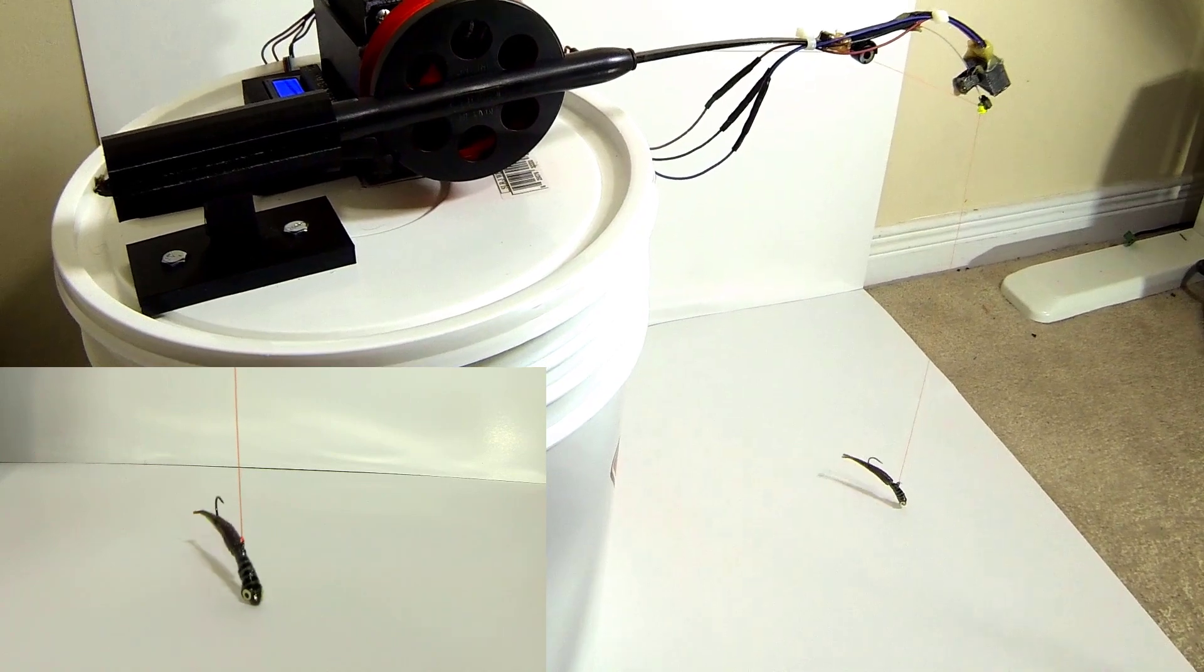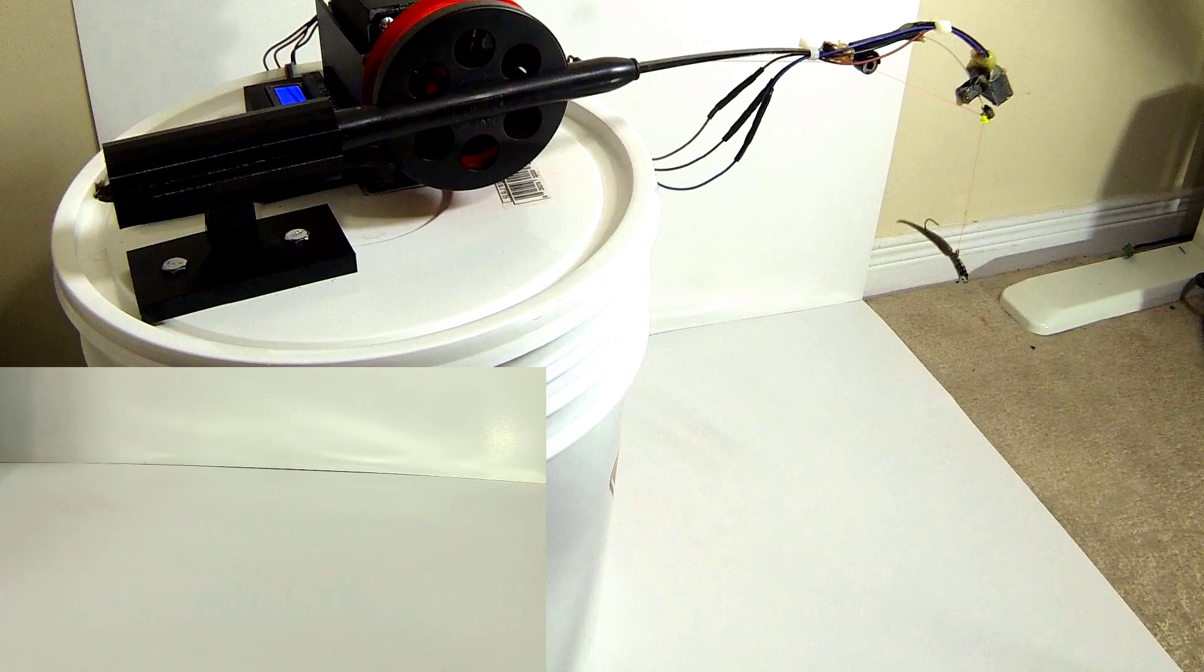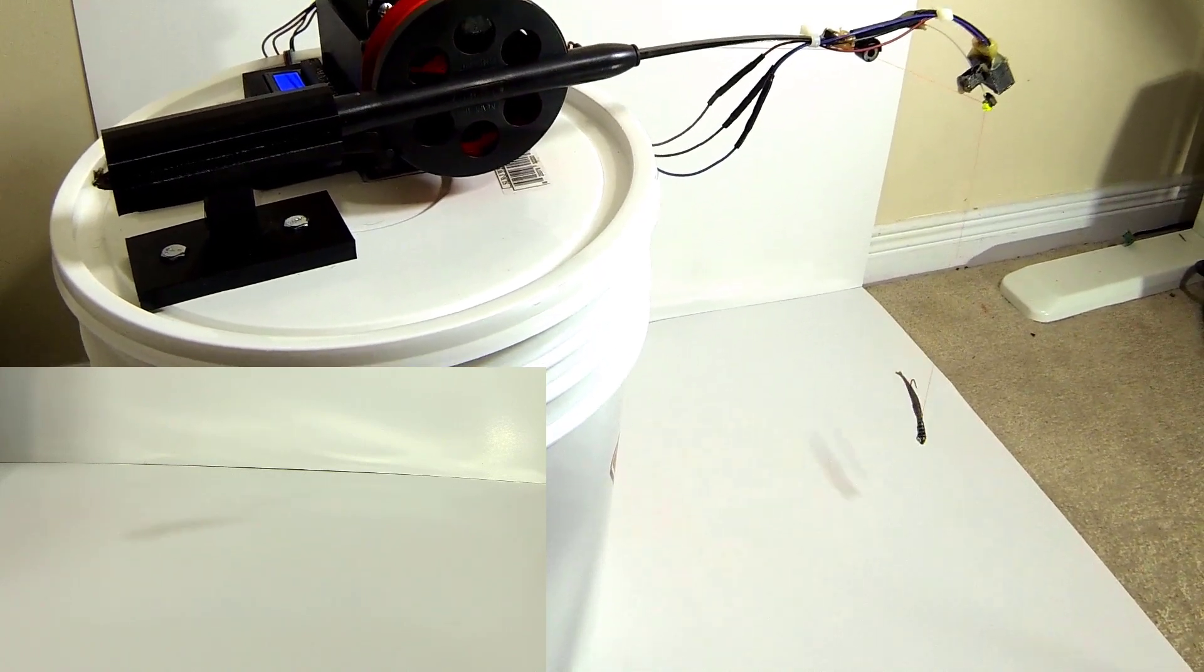Something that really sets this tip-up apart from other tip-ups is that it can detect when a fish pulls your bait or lifts your bait, which is called a negative bite.